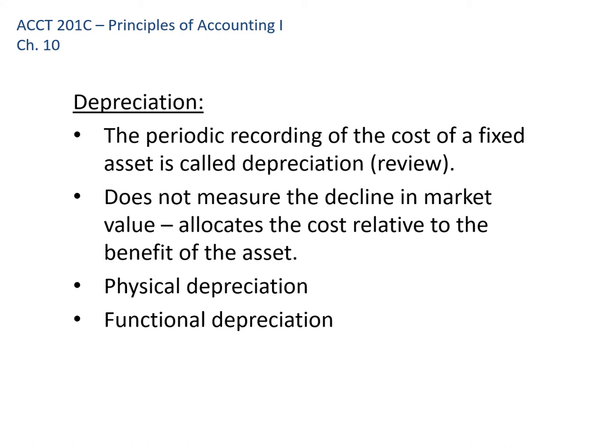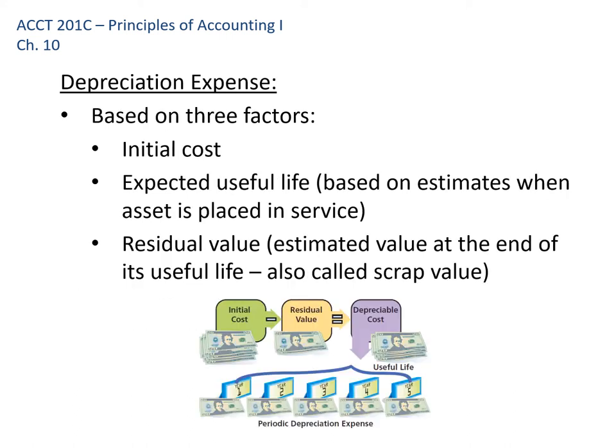Assets become less useful for two reasons. First, they might physically depreciate — a truck may drive like new up to 100,000 miles but once you get over 300,000 or 400,000 miles, it has a lot of problems. Second, things can become less useful because of functional depreciation — for example, salespeople with flip phones from the 1990s that still work but aren't functional anymore. Those assets have lost their value not because they physically wore out, but because they functionally wore out.